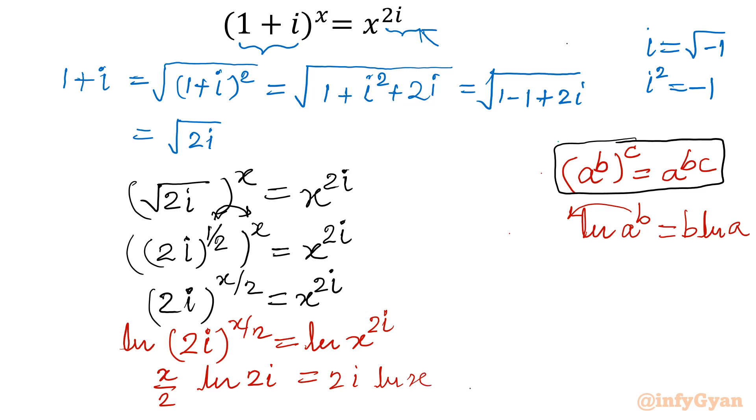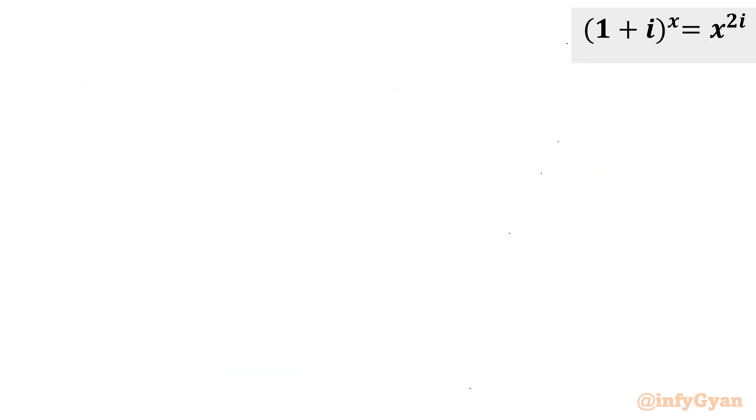Now collect all the respective terms variable at one side. Constant or consideration of complex number terms would be another side. So I will write ln x over x equal to ln 2i over 4i.